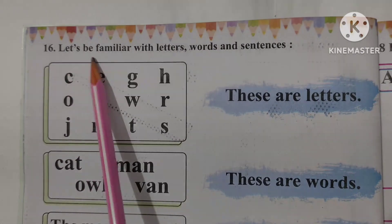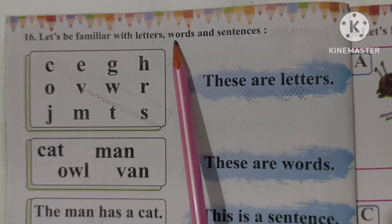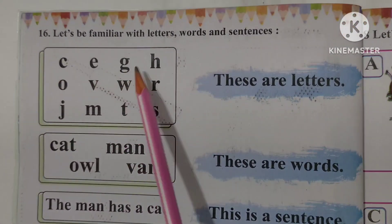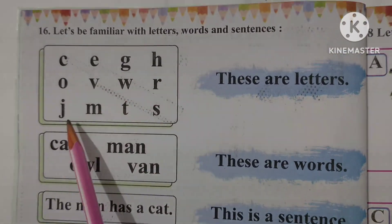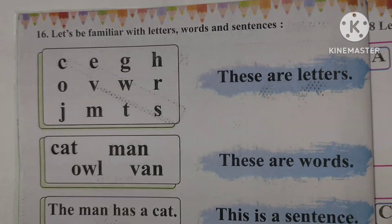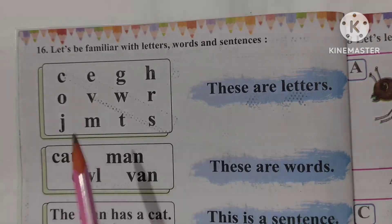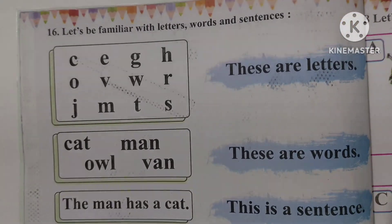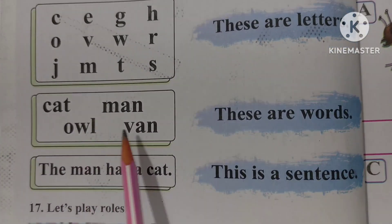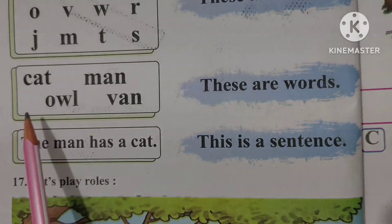Activities 18, Let us be familiar with letters and sentences. Let us look at letters, words, and sentences. C E G H O V W R J M T S, these are letters. That means in English alphabet there are many letters.